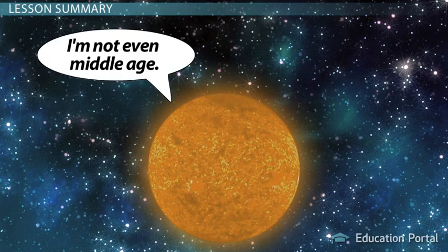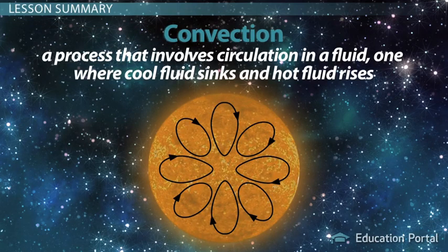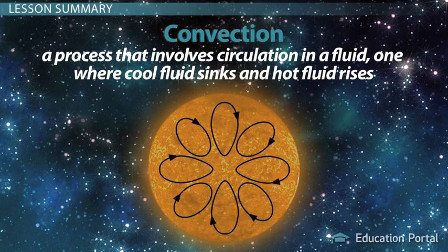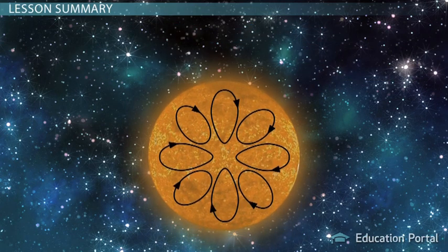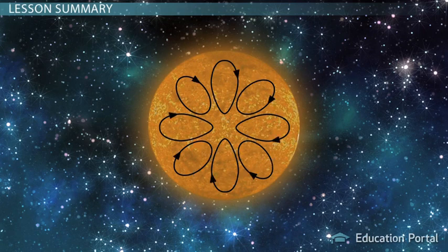One reason, besides their small size, that allows them to live for so long is the process of convection. Convection is a process that involves circulation in a fluid, one where cool fluid sinks and hot fluid rises. In short, this allows a red dwarf to uniformly use its hydrogen, almost all of it, before it dies.